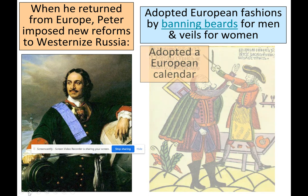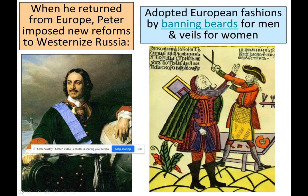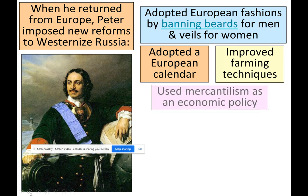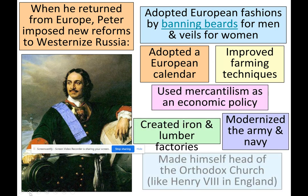When Peter returned from Europe, he imposed new reforms to westernize Russia. For example, he adopted European fashions by banning beards for men and allowing women to wear veils. He adopted a European calendar, improved farming techniques, used mercantilism as an economic policy, created factories for iron and lumber, modernized his army and navy, and made himself head of the Orthodox Church — much like Henry VIII did in England.